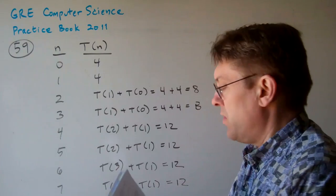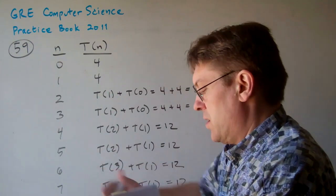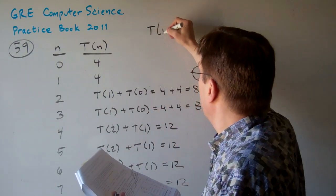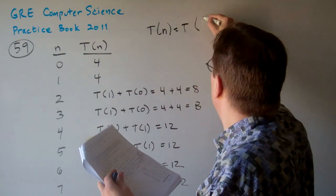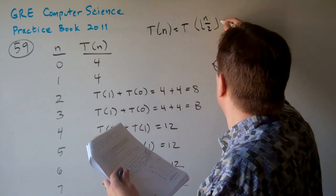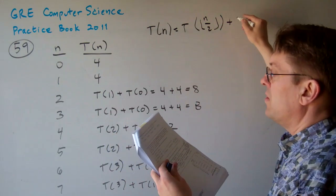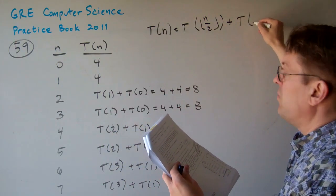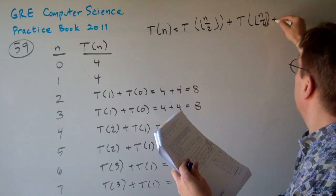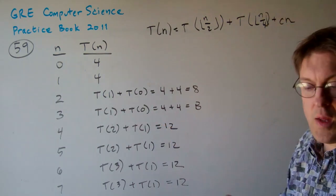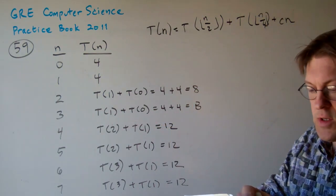Now, here I should write this equation out here so you can see it. This is T of n equals T of the floor of n over 2 plus T of the floor of n over 4 plus C of n. That's the proper equation, but let's just take a look at it.